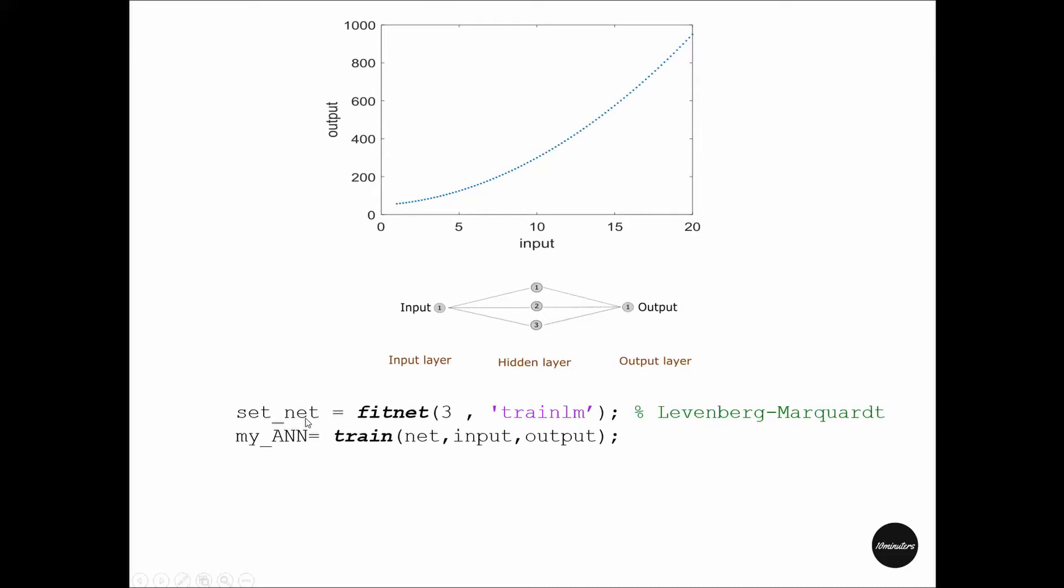First, he will configure the neural network settings, naming it set_net. In fitnet, the first input is how many nodes to use in the hidden layer. Then there's a range of training functions he can choose from. He can choose the Levenberg-Marquardt function, which is quite popular for this sort of application.